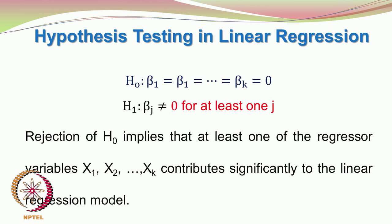When we accept the null hypothesis, we agree that none of the regression coefficients take a value other than 0, so none of the variables are really affecting the response. The alternate hypothesis states that at least one of β1, β2, ..., βk is non-zero — it may be negative or positive. Rejection of H0 implies that at least one of the regressor variables x1, x2, ..., xk contributes significantly to the linear regression model.